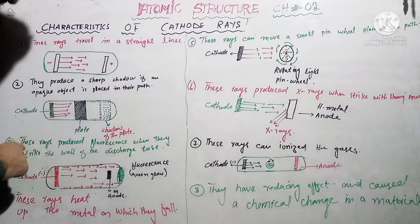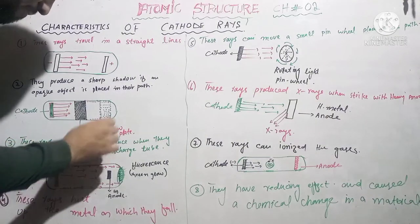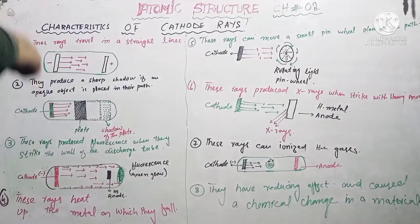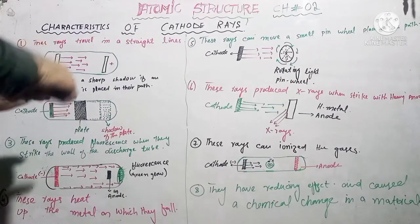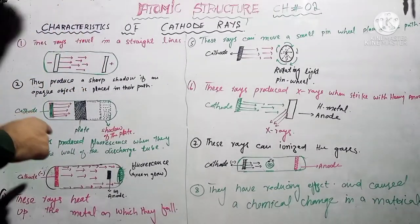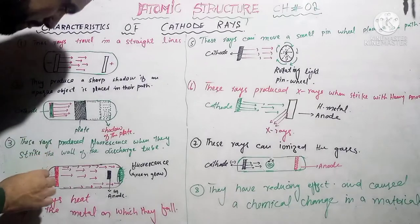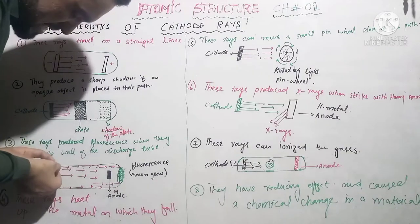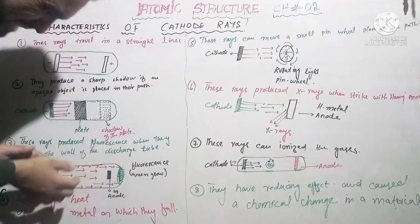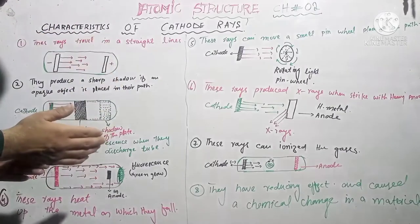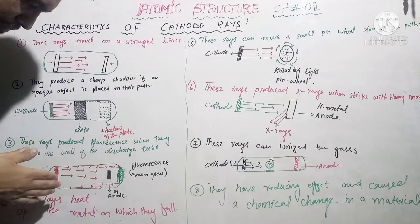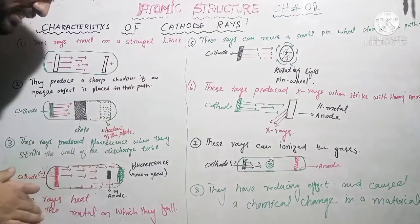The third characteristic is that these rays produce fluorescence when they strike the wall of the discharge tube. When cathode rays hit the discharge tube wall, you can observe this fluorescence as a green glow.